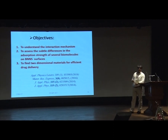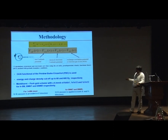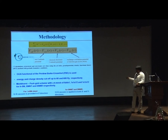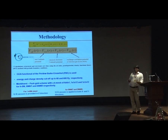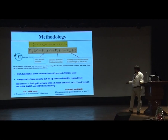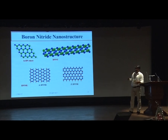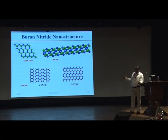We use Quantum ESPRESSO for these calculations with the GGA functional of PBE. Energy and charge density cutoffs are applied. For the boron nitride sheet, a 12 Å vacuum in the z-direction is provided, while for the boron nitride nanotube and nano-ribbon, 12 Å vacuum is provided in two directions — the x and y directions. These are the calculational details applied to all calculations reported here.